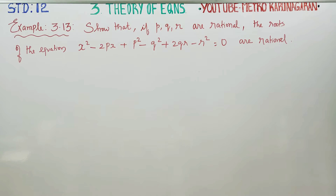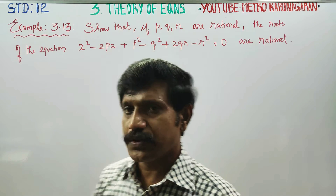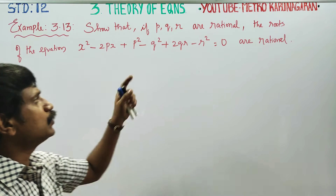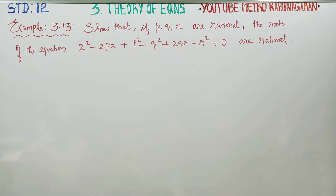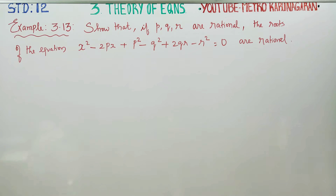Dear 12th standard students, I am Metro Karanagaran. In Theory of Equations, example 3.13: show that if P, Q, and R are rational numbers, the roots of the equation are also rational.